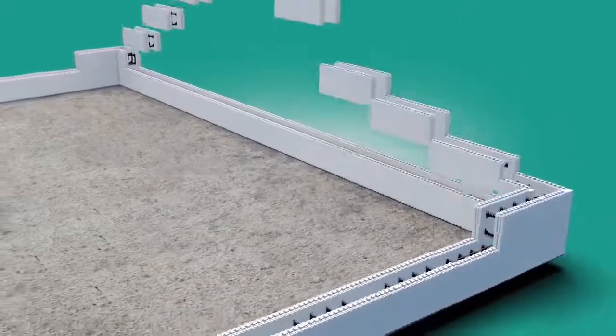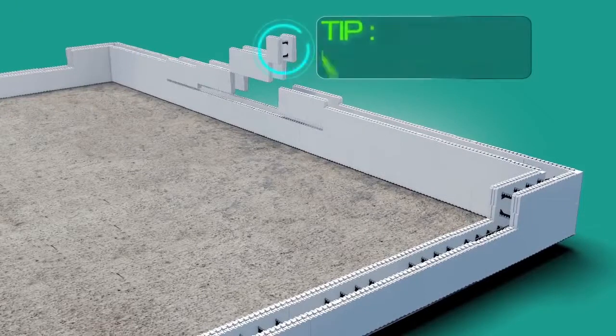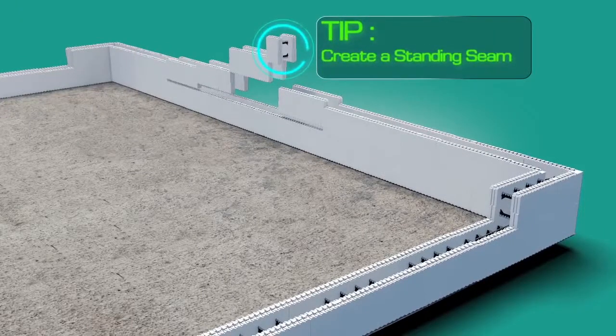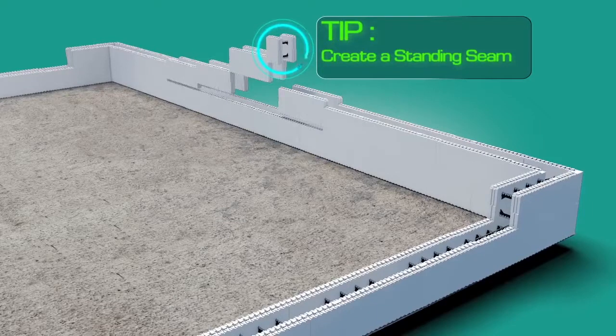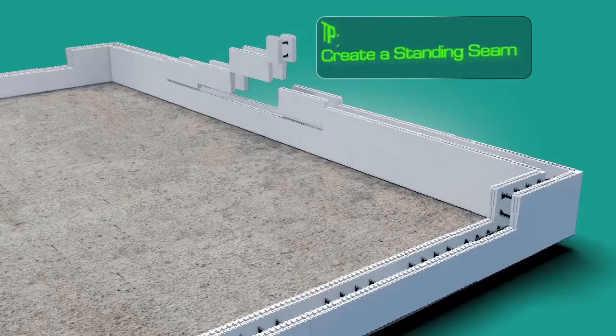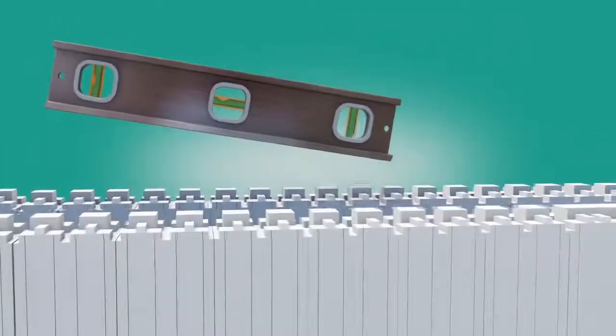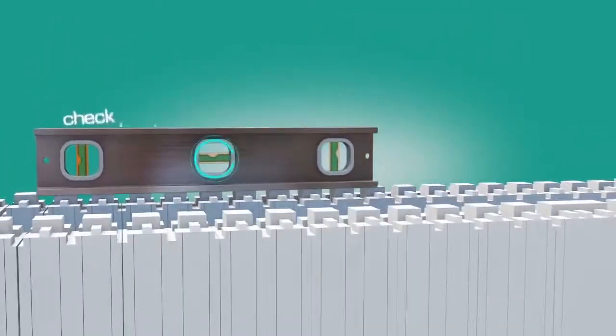At this point, check for level across all of the blocks. If the courses are not level, use shims or trim the block as required.